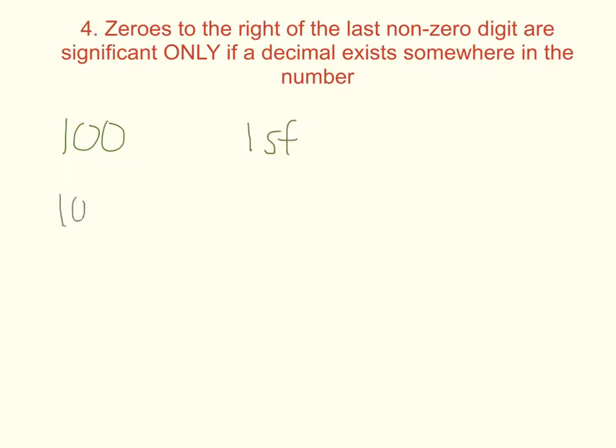But if I wrote it like this, 100 and put a decimal in there, that's an indicator that I measured with a certain amount of certainty to 100 on the dot, not just the place 100. So this would have three sig figs.